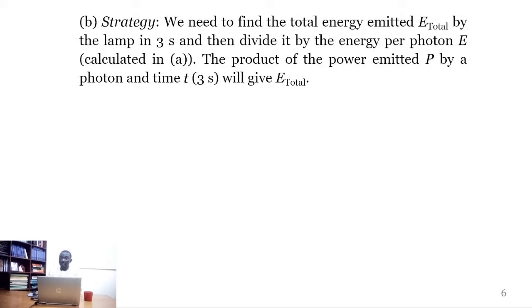The strategy for question B is that firstly we need to find the total number of energy emitted by the light source in 3 seconds, then divide that energy by the energy emitted per photon, which we have calculated in part A of the question.